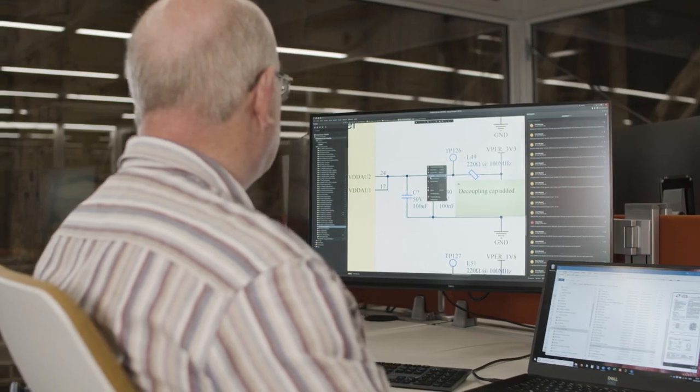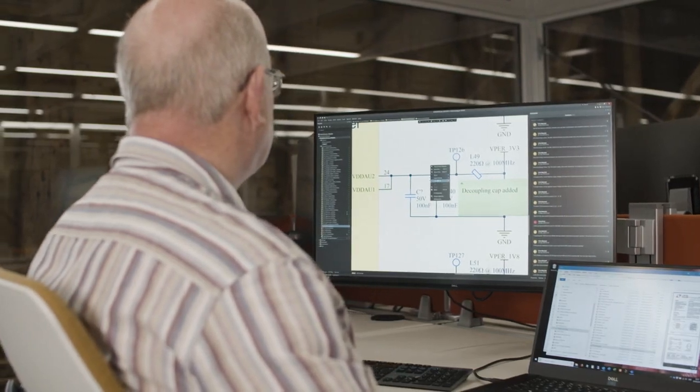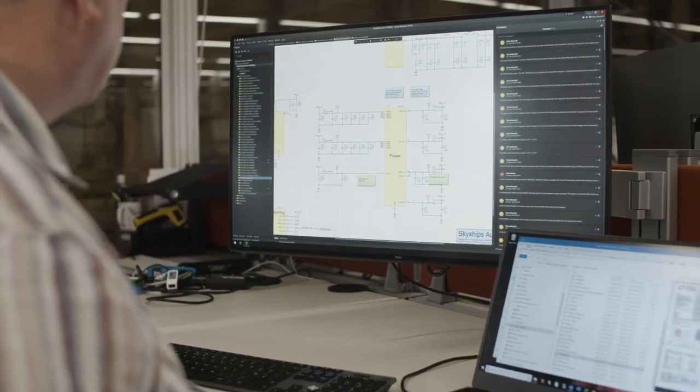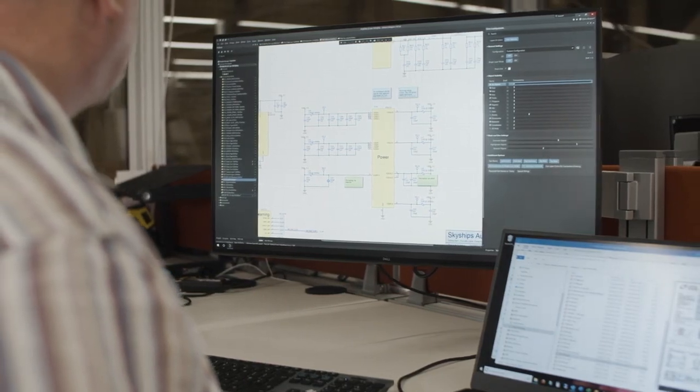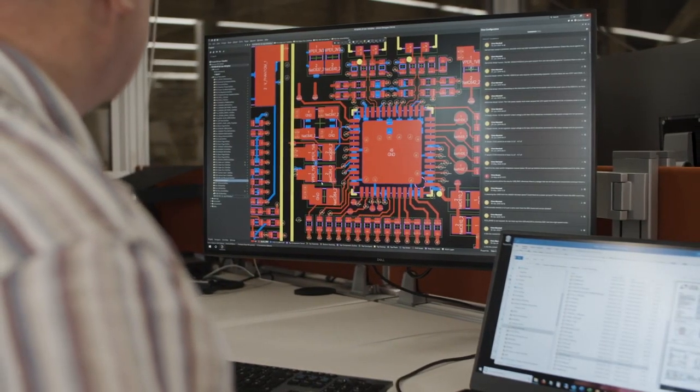This is where Altium 365 comes in very handy. We use the Altium 365 workspaces as a way to keep all our components, designs, and projects all in one place, so that everybody's working from the same source of information. It's also useful for keeping track of those parts as well, and we find the version control system in that very useful.